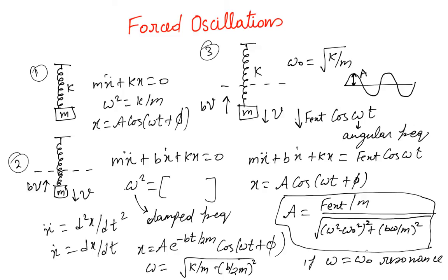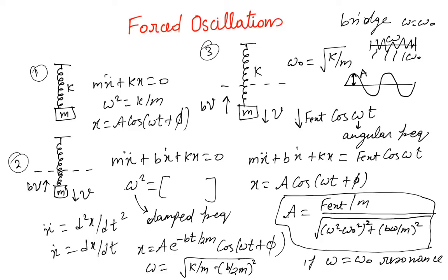Resonance is very dangerous — sometimes bridges break down because of wind. Bridges have a natural frequency ω₀, and if wind oscillates at frequency ω equal to ω₀, the bridge starts going up and down with a very large amplitude. The mechanical structure cannot support this high amplitude and breaks down. Resonance occurs when the natural frequency of the system equals the forced frequency.